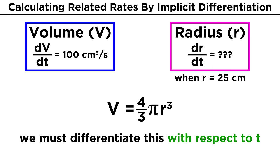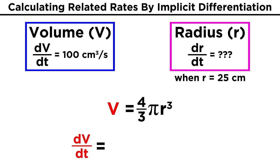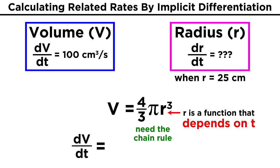Now as we said, what we are looking for is DR over DT, so let's differentiate this with respect to T. For V, that simply becomes DV over DT, but for the right side, we will need to use the chain rule. This is because T is not present in this equation. The radius is the variable, but the radius is itself a function of T, which is why we use the chain rule.